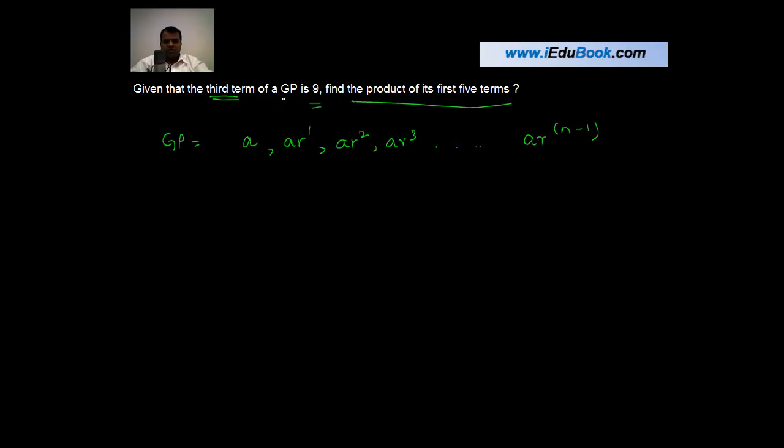You are told that the third term of the GP is 9. So in other words, AR^2, which is this third term, is equal to 9.